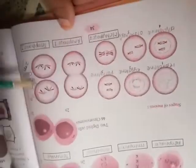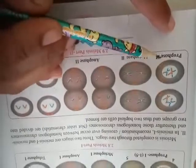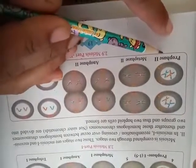Now these two cells will again re-enter into the second phase of meiosis 2. In meiosis 2 also, the names are prophase 2, metaphase 2, anaphase 2, telophase 2.